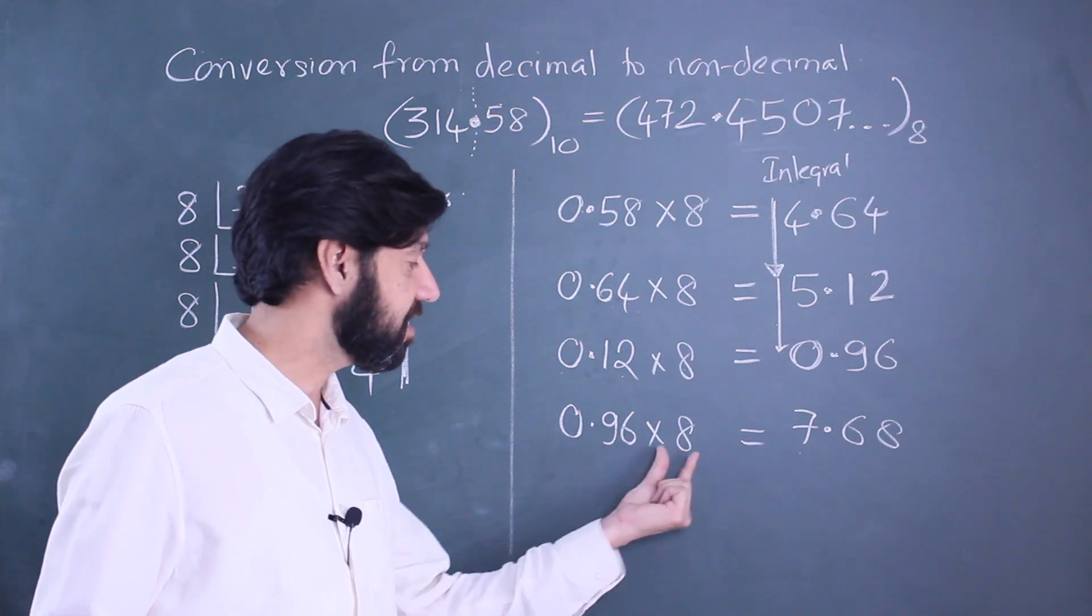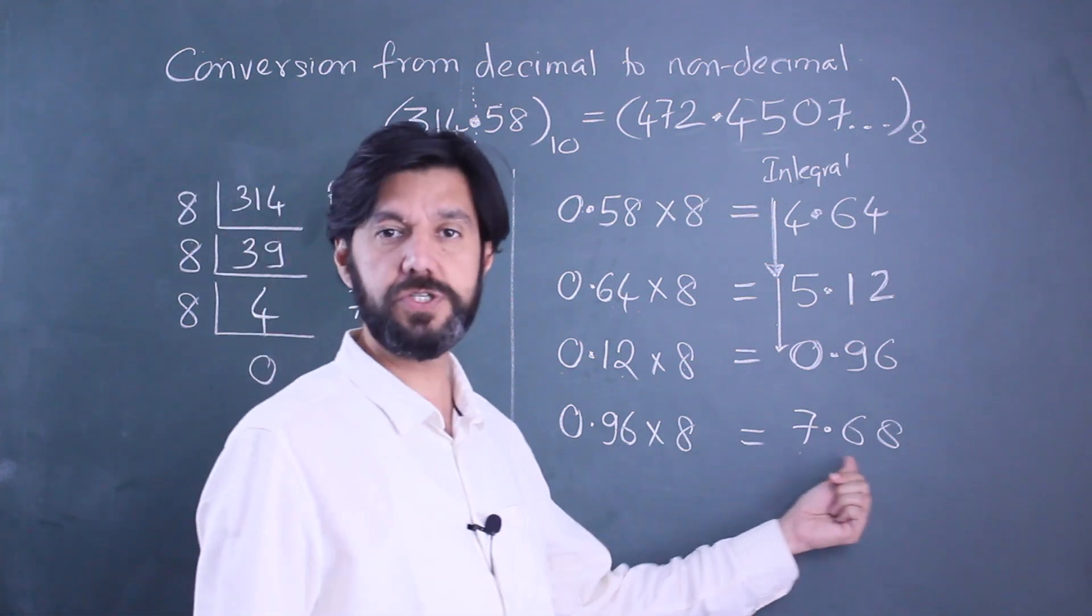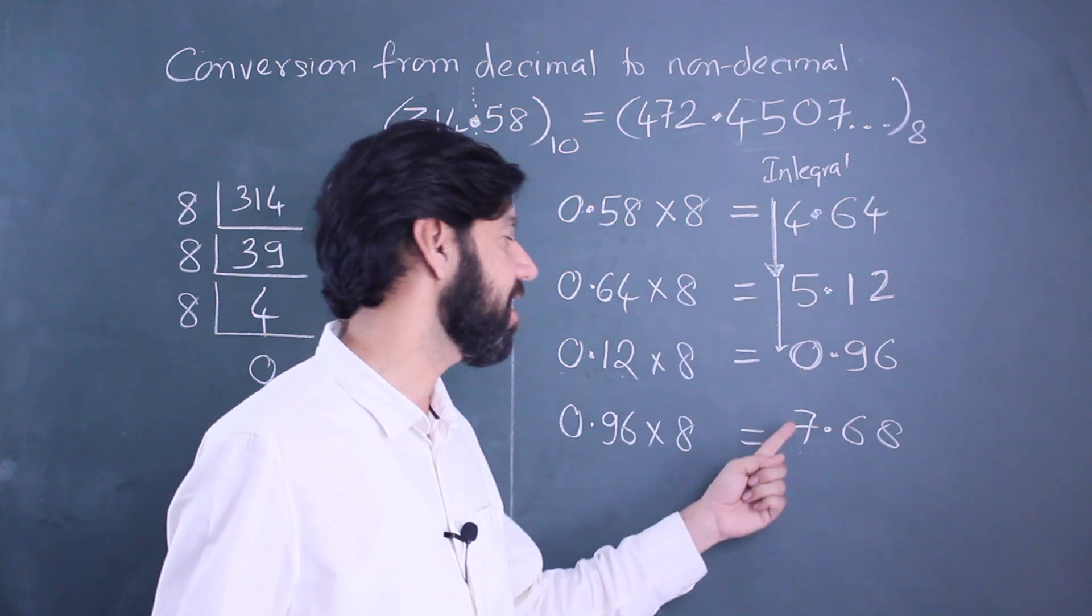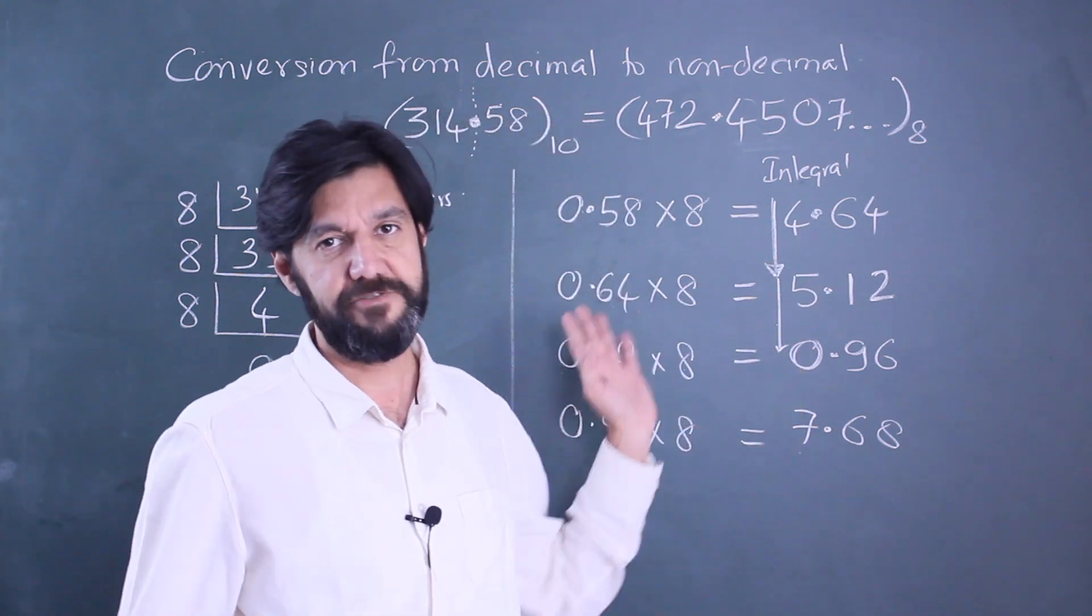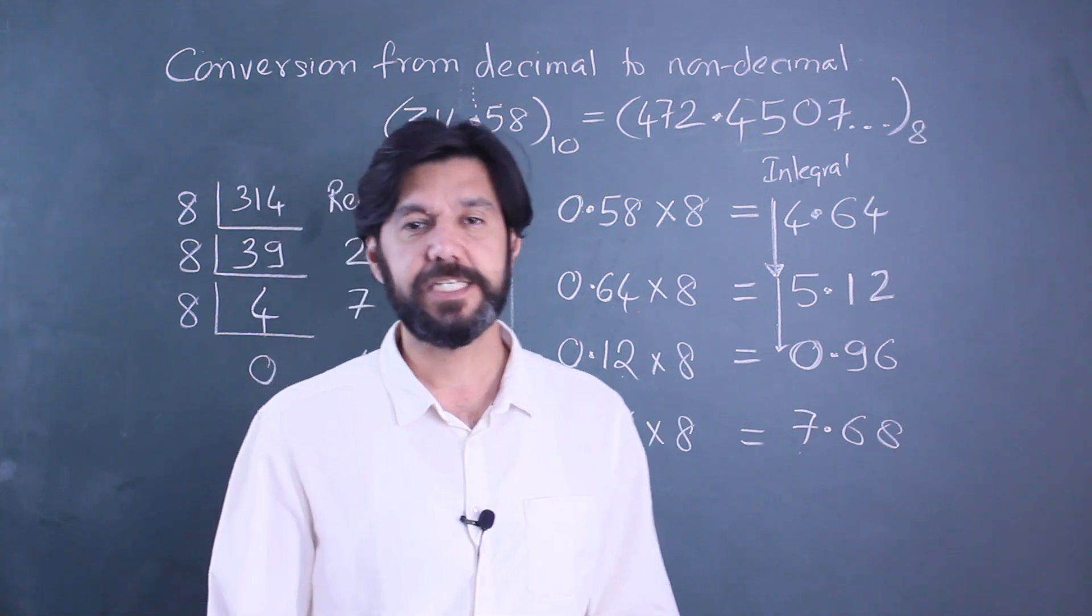So the integral part here will never be 8. Look, 0.96 is as close to 1 but it will still be a decimal part, so the answer will be less than 8. I can get a 7 but I'll never get a digit more than 7, which is again as expected.